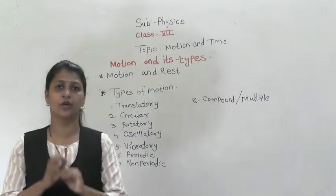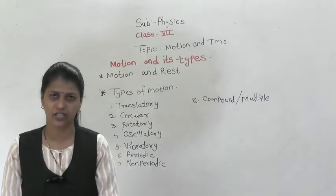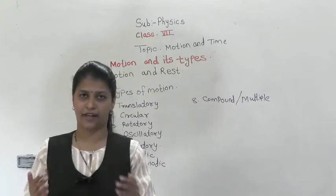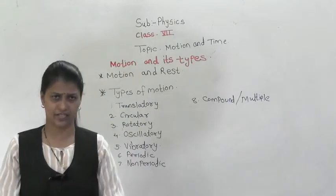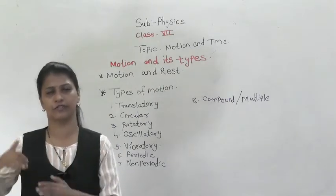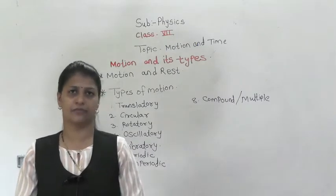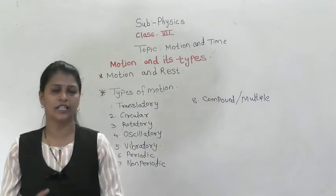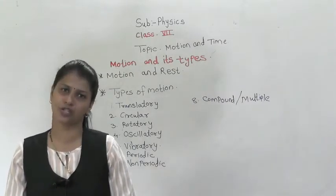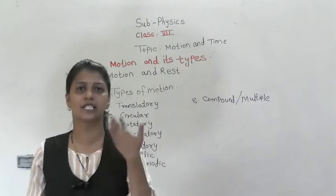Consider another example: you are sitting at home. Are you in motion? Yes, you are in motion. Why? Because if an astronaut watches you from the moon, they will say you are in motion. The Earth rotates continuously, causing day and night, so you are always in motion. Motion is defined with respect to a stationary object.